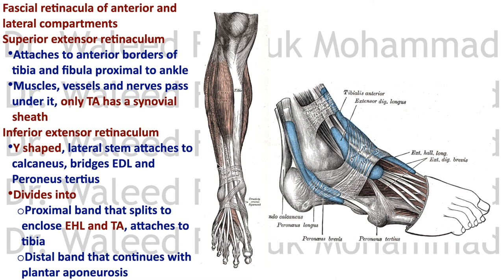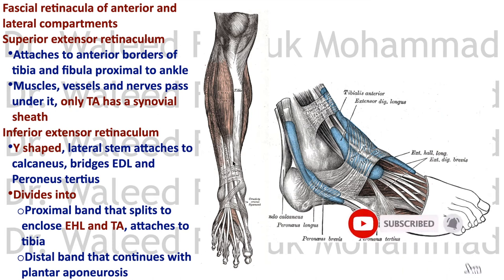The retinacula include the extensor retinaculum, the flexor retinaculum, and the peroneal retinacula. The superior extensor retinaculum lies between the anterior margins of the tibia and fibula, proximal to the ankle. Muscles, vessels, and nerves pass under it. The only muscle with a synovial sheath under this retinaculum is tibialis anterior, so the synovial sheath of tibialis anterior begins more proximal than the other tendons.